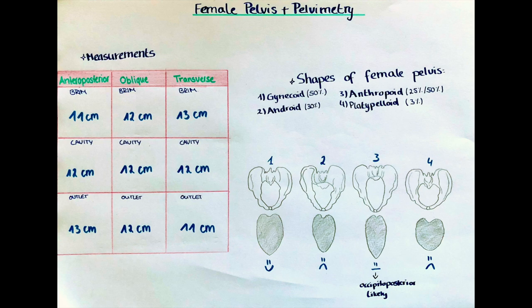As you can see in the table on the poster, if you remember how to write down the chart, it is very easy to memorize the cm measures. As mentioned earlier, we can only measure the anteroposterior diameter of the pelvic brim directly. All other measurements are either calculated from this measurement or are measured in an X-ray image or MRI.